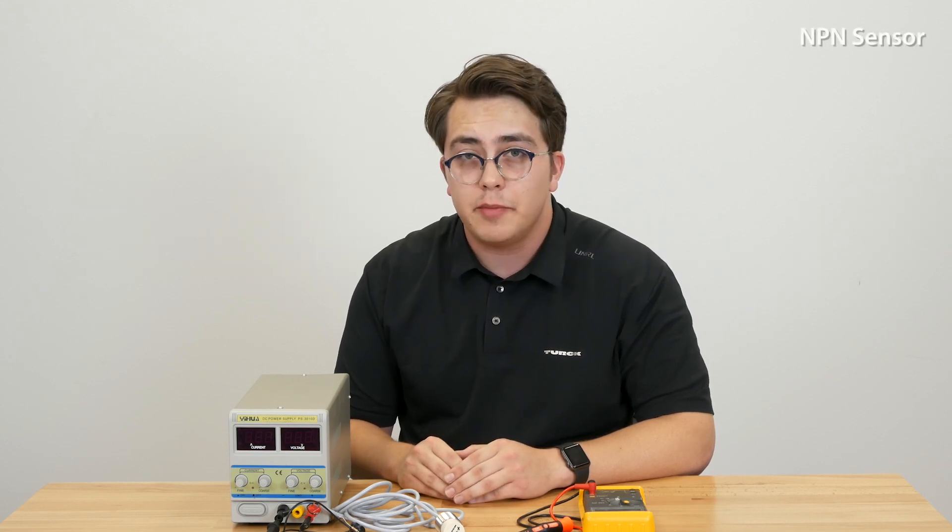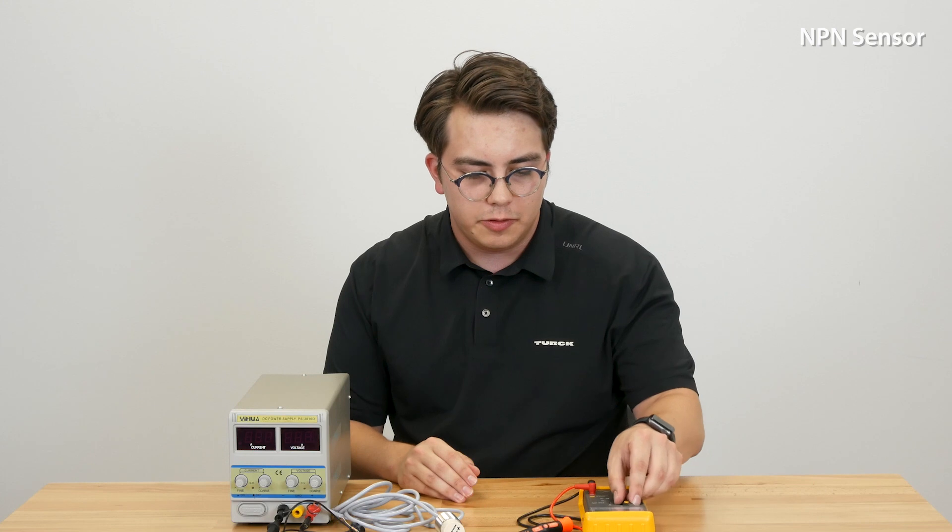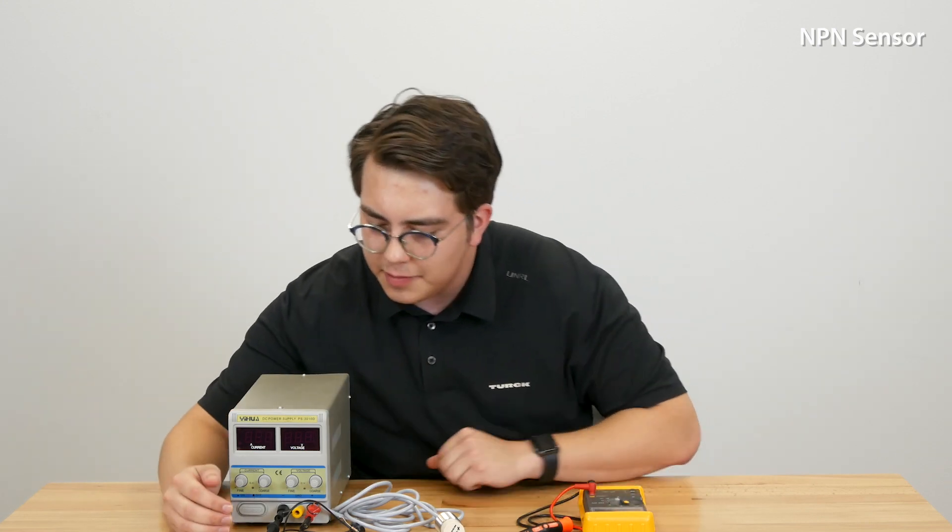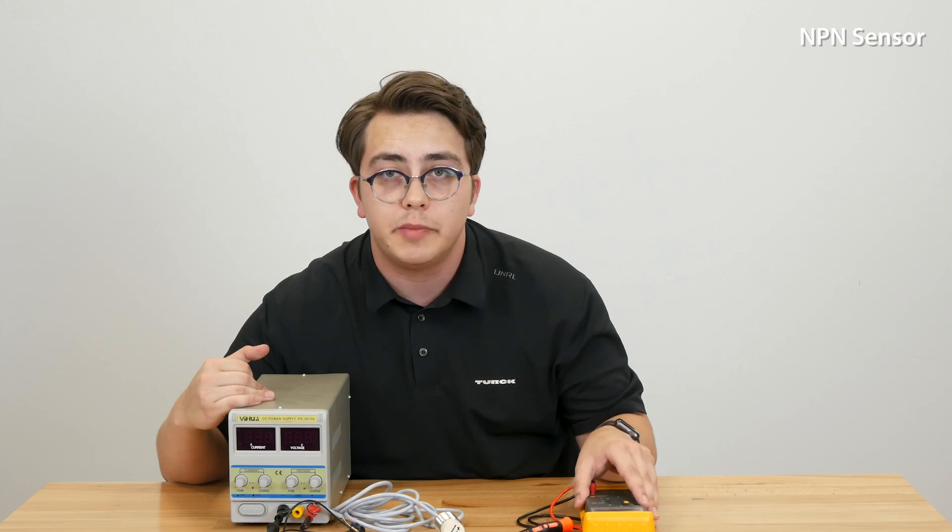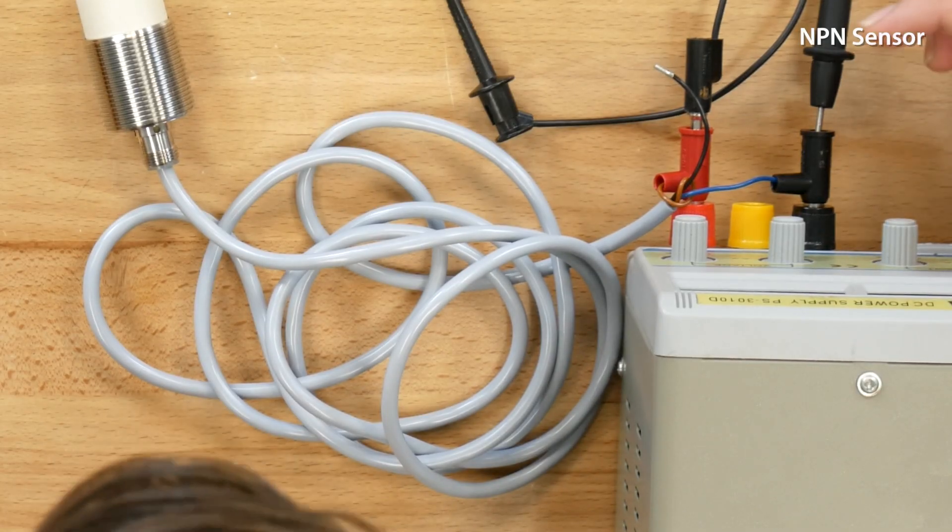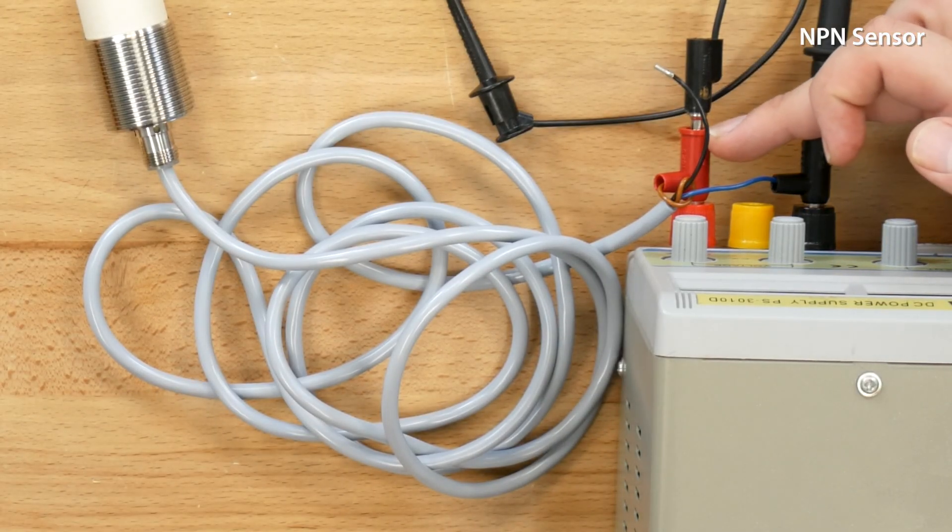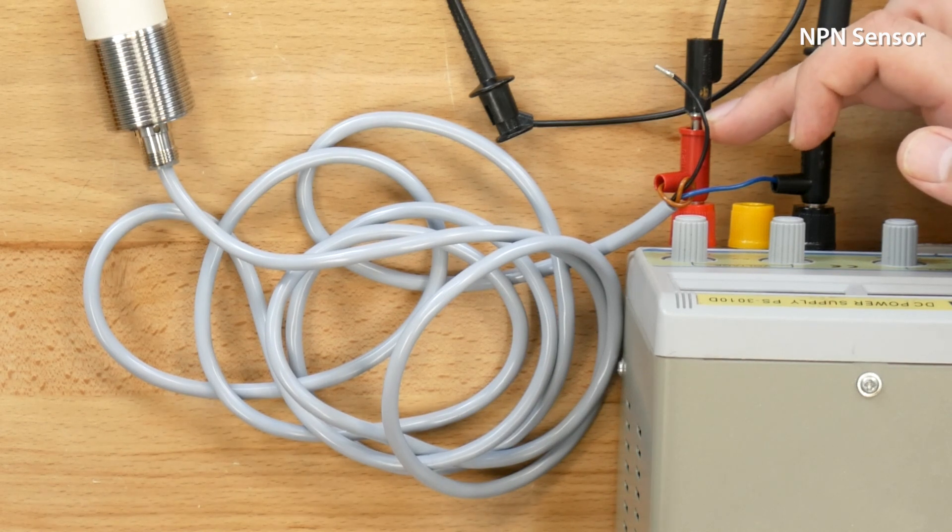We're going to start out with an NPN sensor and first we'll show you how to get this hooked up. So you'll need a 24 volt power supply and a multimeter. You will take your pin 1 which is your 24 volt and connect it to the 24 volts on your power supply.